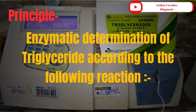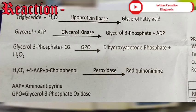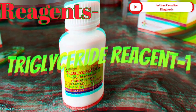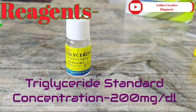The principle is the enzymatic determination of triglycerides according to the following reaction. The final product is a red quinoneimine dye complex. Reagents required: Triglyceride Reagent 1, and Triglyceride Standard at a concentration of 200 mg/dL.